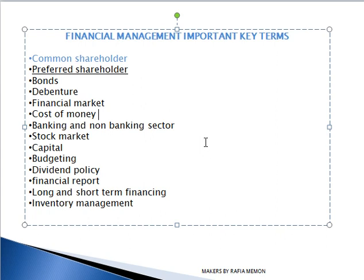Preference shareholders won't be voting in the company. The main difference from the common shareholder is that they don't have voting rights, but they do have a fixed dividend. The dividend is set beforehand — they will get a fixed amount of money. Common share dividend is decided after the fact, while preference share dividend is decided before.